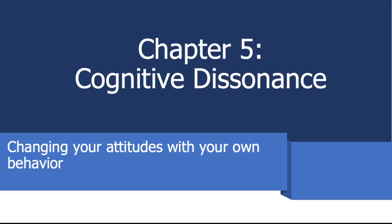In the last chapter of our episode on persuasion, we want to talk about something slightly different: self-persuasion — changing your own attitudes with your own behavior by utilizing the process of cognitive dissonance. Cognitive dissonance was, in the 1960s, one of the most active fields of research in social psychology. It really left a mark on the popular understanding of psychology, and I think cognitive dissonance is today part of most anyone's vocabulary.